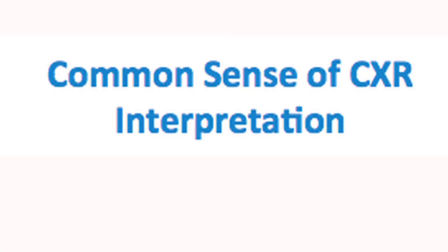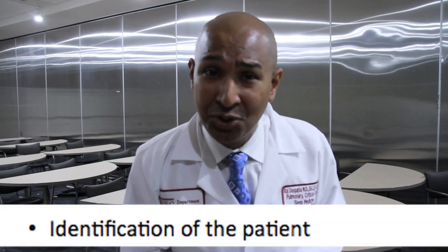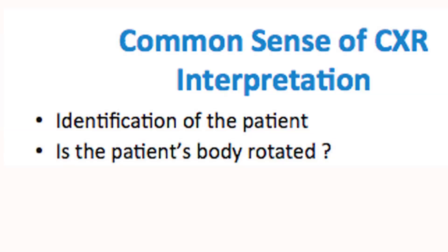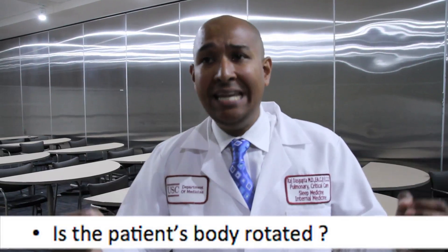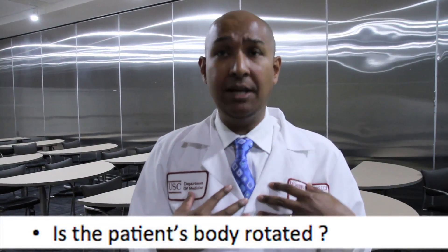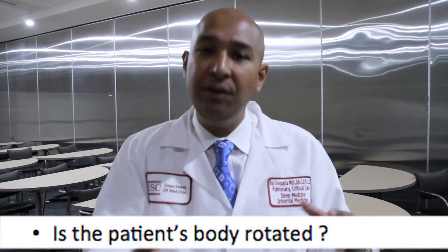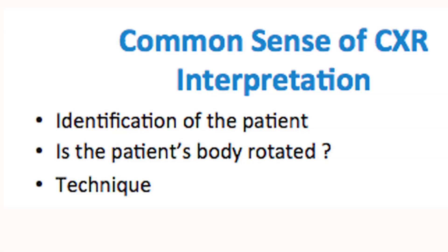This slide gives you some basic tips everyone needs to understand before going into the details of a chest x-ray. Number one: identify the patient — is it the right person? Number two: rotation. It's very important to realize that before interpreting a chest x-ray, what was the technique? Was the patient rotated to the right or to the left? Was the patient rotated up or down? It really will change the way you interpret a chest x-ray. Technique means: is the chest x-ray over-penetrated? Is it going to be too dark?